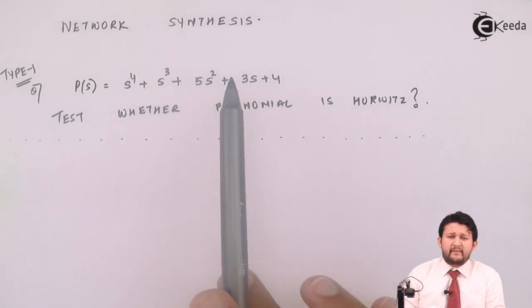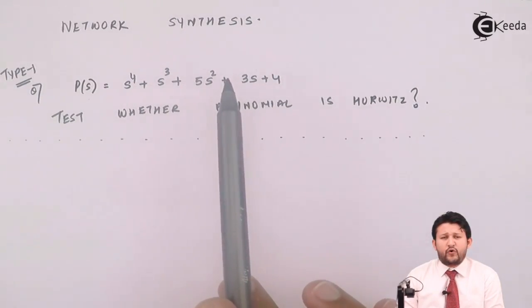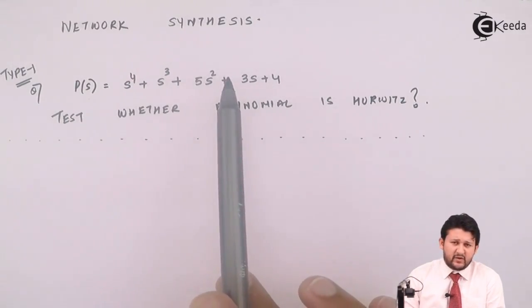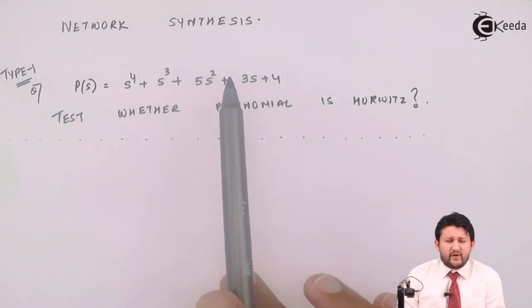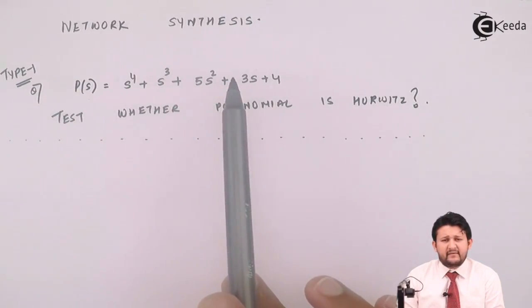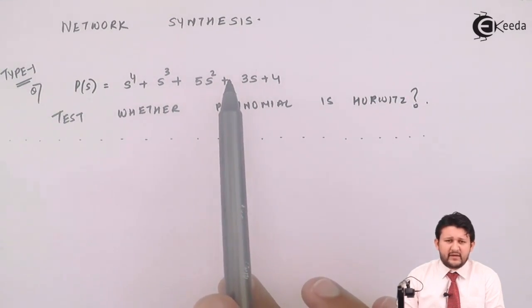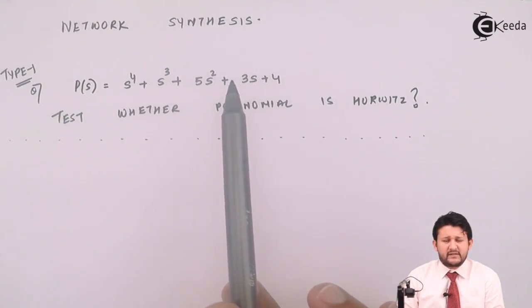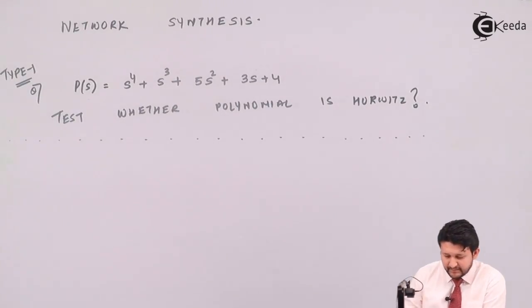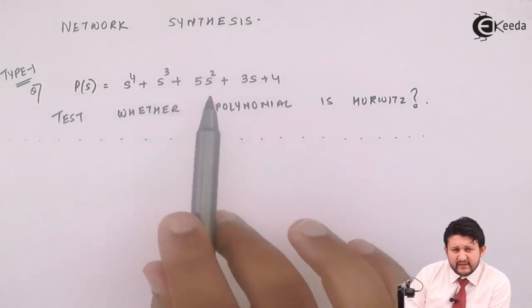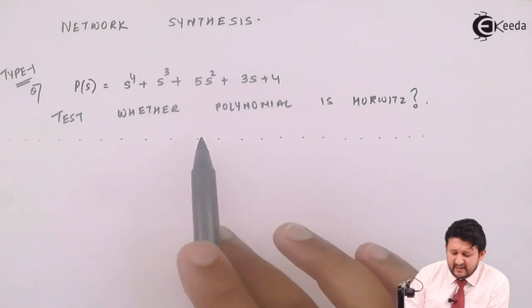Again, there should not be any missing term. For example, your powers are six, four, two, zero. If the sequence is six, four, zero - two is not there - that's not valid. In case of odd: nine, seven, five, three, one. So if it is only nine, seven, three, one - five is not there - that's invalid. These four steps. So let's start, my dear friends, if all these four conditions are fulfilled.